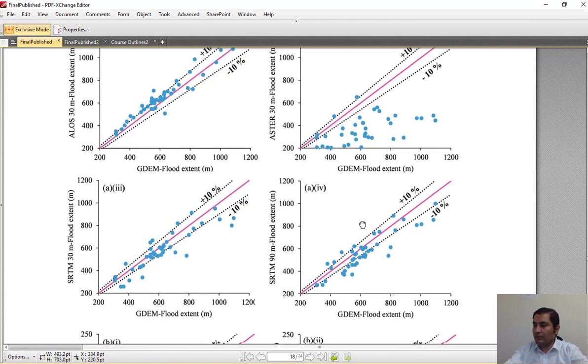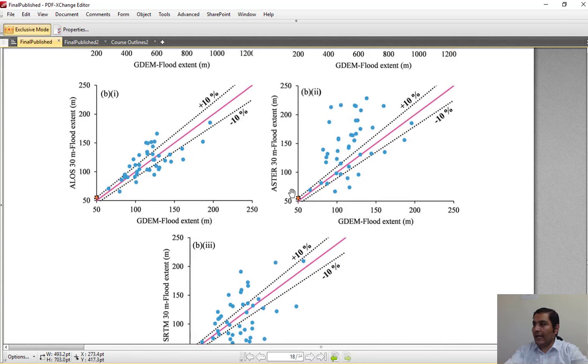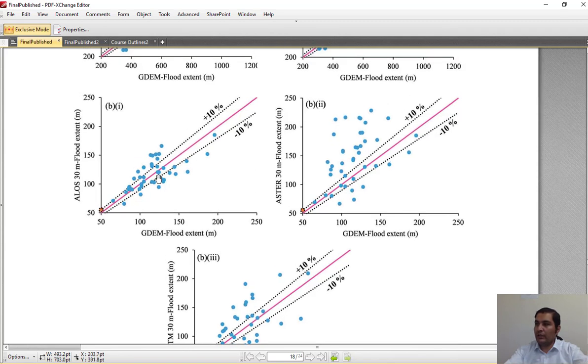Also, for Sojas River, SRTM and ASTER 30 meter perform worse with unsatisfactory outputs, while ALOS performs better for a smaller river. However, there are a little bit more errors in flood extent, but it's completely obvious because when you are using remotely sensed DEM for a smaller river, you shouldn't expect high accuracy results. This result is completely okay, and you shouldn't expect higher performance in a small river.